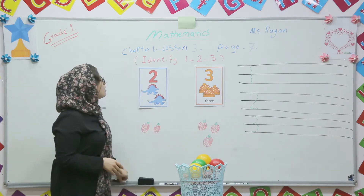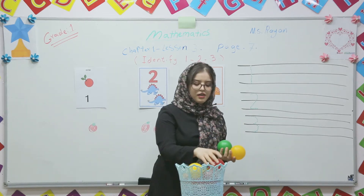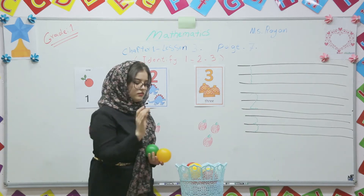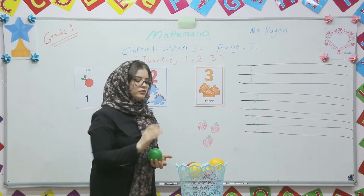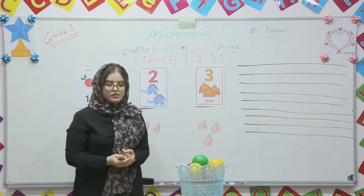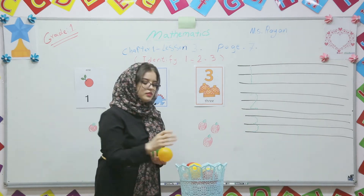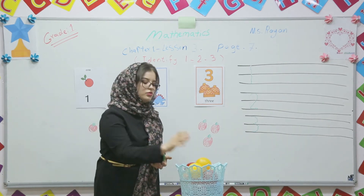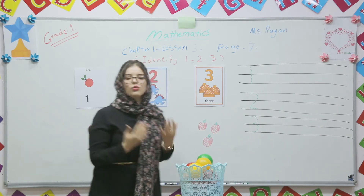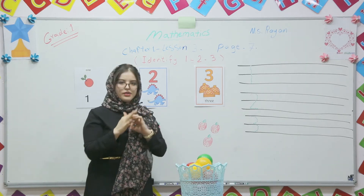So first of all, we are starting with the counting. How to count? For example, here: 1, 2, 3. You see, we have got 3 balls. Again, let's repeat: 1 ball, 2 balls, 3 balls. You see? So this is counting: 1, 2, 3. With your fingers: 1, 2, 3. Okay?